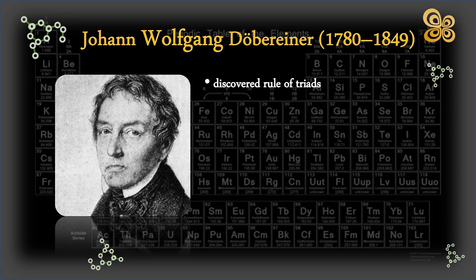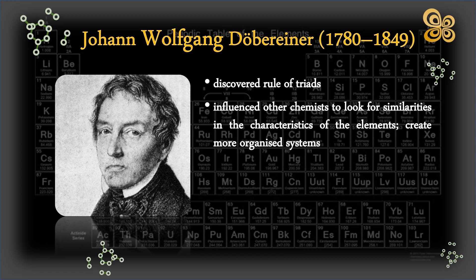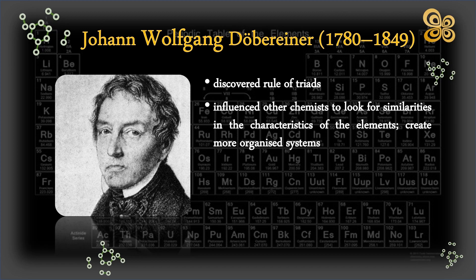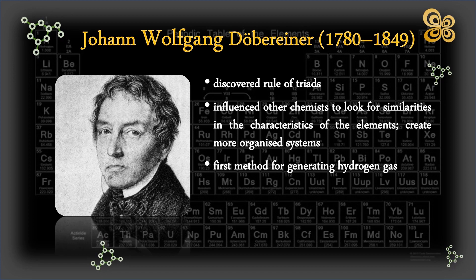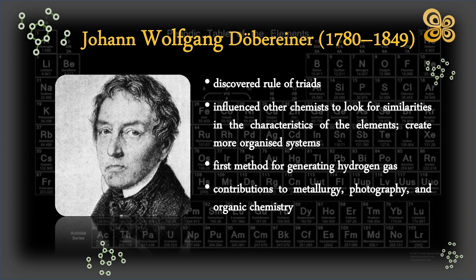His work influenced other chemists, including John Newlands and Dmitri Mendeleev, to look for similarities in the characteristics of the elements and to create more organized systems for classifying them. Döbereiner's work on the law of triads was in addition to his discovery of numerous chemical substances and procedures, including the first method for generating hydrogen gas by reacting zinc with sulfuric acid. He made significant contributions to metallurgy, photography, and organic chemistry, and he is regarded as a modern chemistry pioneer.